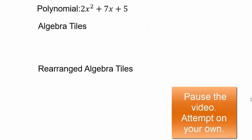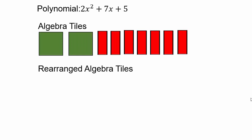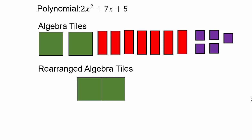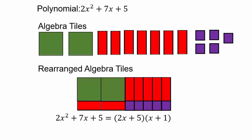Let's try another one. We have 2 x squared, 7 x's, and 5 singletons. To arrange them: put the 2 x squares vertically, then the red pieces go in a row, and 5 singletons fill the corner. Writing it as a product: this is 2x plus 5 and this is x plus 1. So we'll have 2x plus 5 times x plus 1.